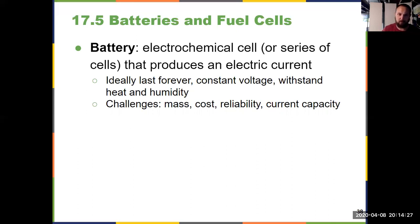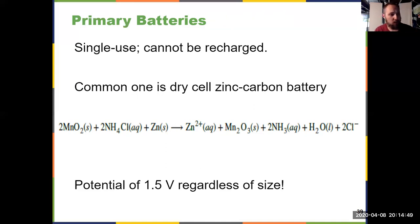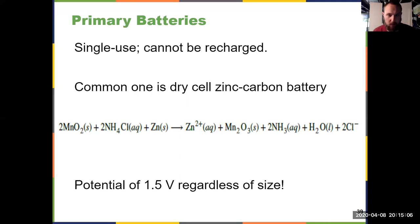Starting with primary batteries — these are the Duracells or Energizers you traditionally think about. You use them one time, you can't recharge them, so you use them and then recycle them. The most common primary battery type is a dry cell zinc-carbon battery, which involves manganese oxide, ammonium chloride, and solid zinc. Zinc gets oxidized from zinc zero to zinc two as part of the reaction. Zinc is actually what the battery container is made of, which is why those batteries inevitably end up leaking.